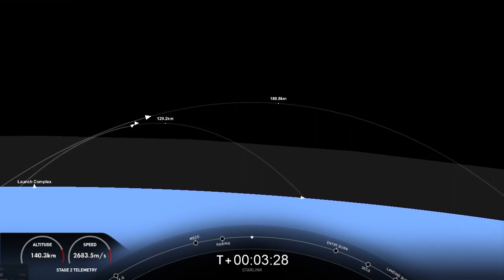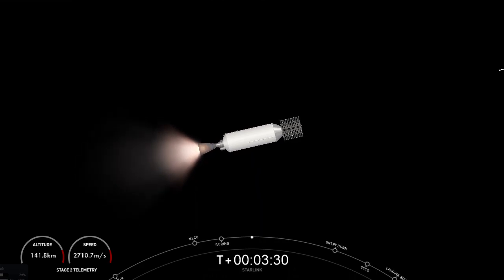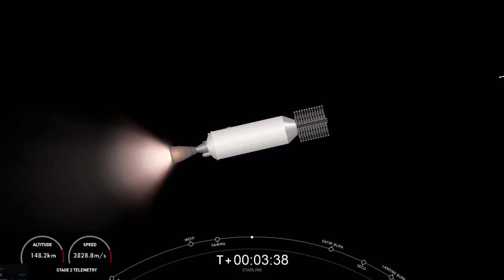Beautiful night out here. On the right side of your screen, you can see Stage 2 is accelerating into space, while the left side of your screen, Stage 1, the grid fins have deployed, and Stage 1 is entering back into the Earth's atmosphere.